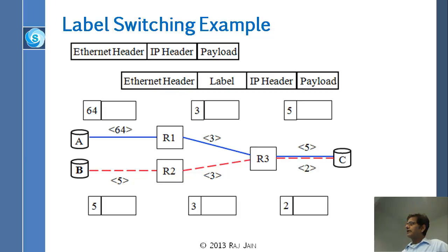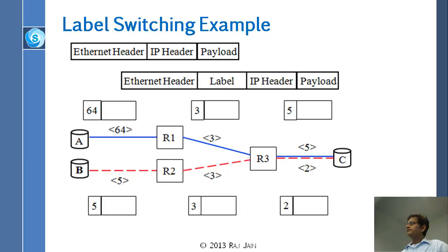Before you put the label, you talked to the other router saying I want to get to C, I want to set up an LSP. R1 says: label all the packets with 64. Then R1 says to R3: I want to go to C, can I set up an LSP with you? R3 says: every time you send a packet, please put the label 3. R3 tells C: you can send it at label 5. So the next hop tells you what the label should be, and the next hop has made an entry in its table. Whenever it gets a packet coming on 64, it wants to send it on 3.